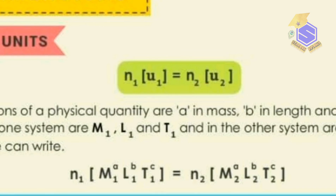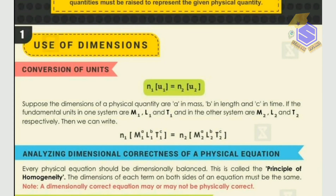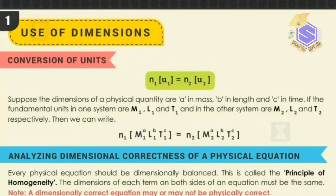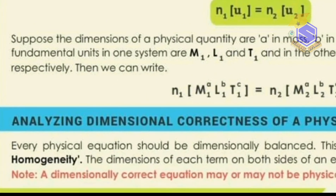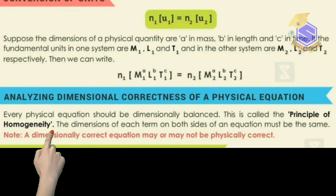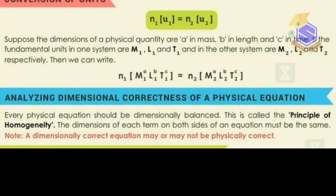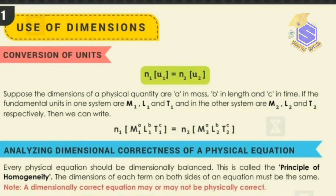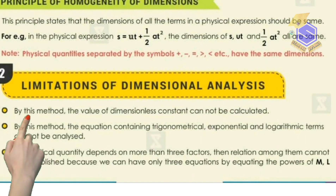Under the SI system we have fundamental units (base units), supplementary units, and derived units. Dimensional analysis is also used to check the correctness of a given physical equation — dimensional correctness means the dimensions on the left-hand side and right-hand side should be the same. We already read about the principle of homogeneity of dimensions. If dimensions on both sides are equal, the equation is dimensionally correct. By dimensional analysis, we can even derive equations.